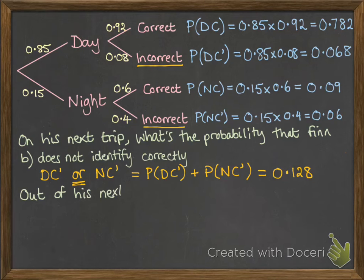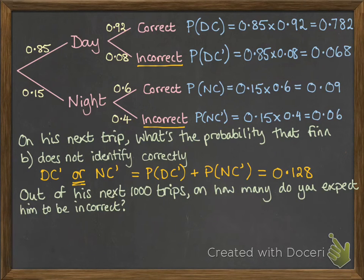Okay, what about, if we think about this one, of his next 1,000 trips, how many of them would you expect him to be incorrect? Now, we've just worked out that the probability of him being incorrect was 0.128. So we need to apply that to 1,000 trips. So for that one, we just times it by 1,000. We can expect on 128 of his next 1,000 trips, he will incorrectly identify the other vessels.